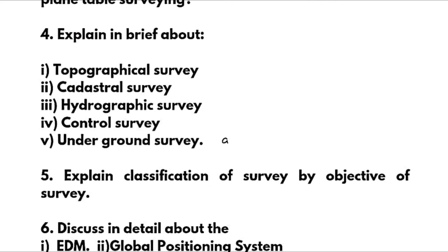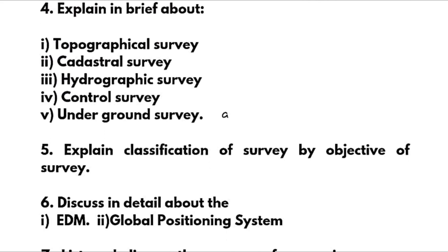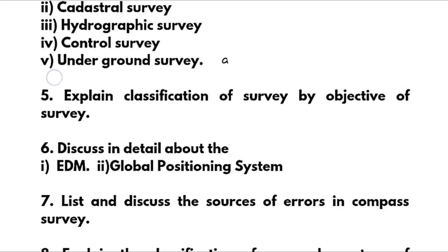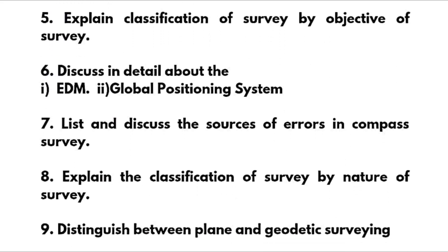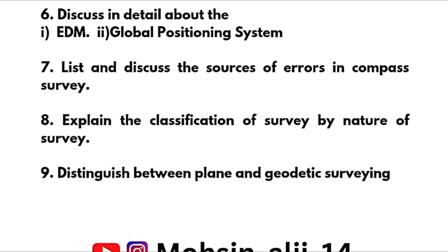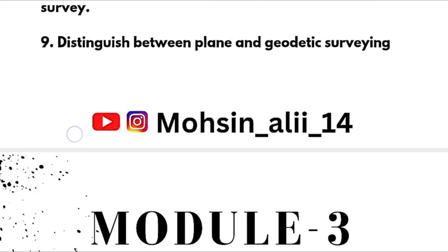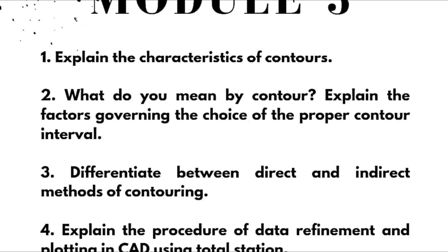Further Module 1 questions include: Explain briefly topographical survey, cadastral survey, hydrographic survey, control survey, and underground survey — that is, classification of survey by objective. Discuss in detail about EDM and global positioning system. List and discuss the sources of errors in compass survey. Explain the classification of survey by nature of survey and distinguish between plane and geodetic survey. This completes Module 1.